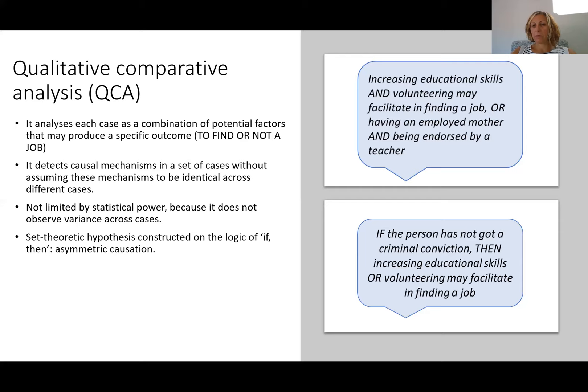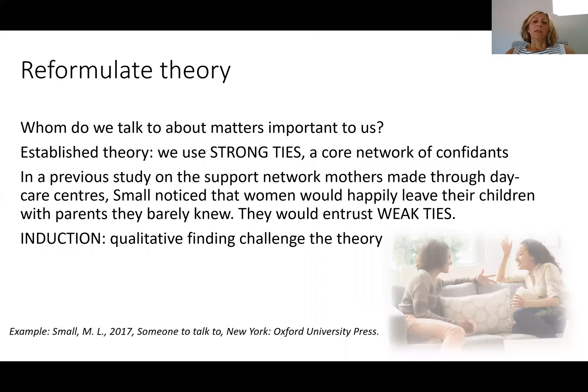So if a person, for example, has not got a criminal conviction, then increasing educational skills or volunteering might facilitate finding a job. This type of analysis allows you to make hypotheses for both people who find jobs and those who don't find jobs — and therefore the combination of mechanisms that might produce one or the other outcome might be very different.